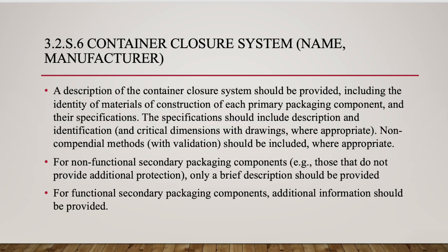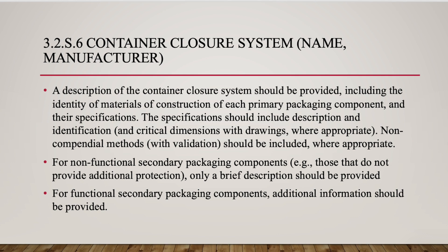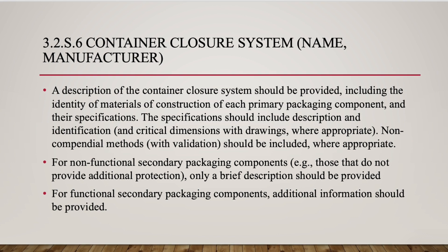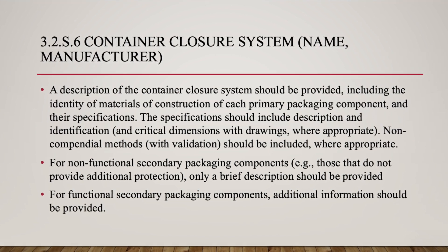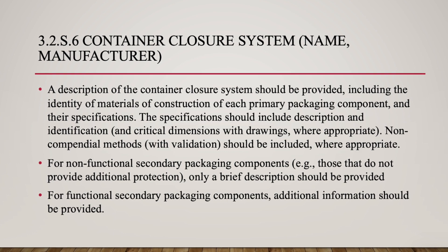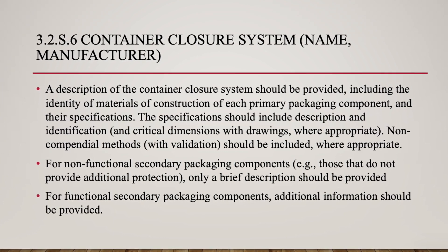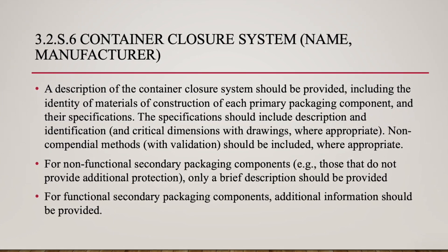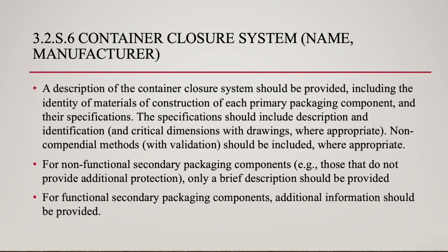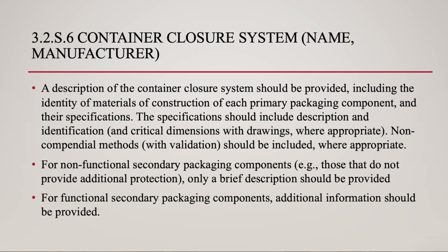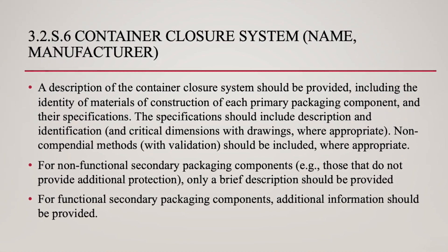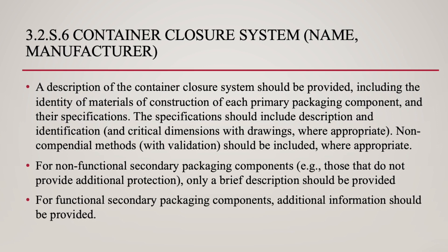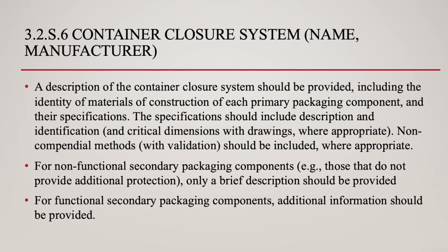3.2 S.6 Container Closure System — name, manufacturer. A description of the container closure system should be provided, including the identity of materials of construction of each primary packaging component and their specifications. The specifications should include description and identification, and critical dimensions with drawings, where appropriate. Non-compendial methods, with validation, should be included where appropriate.